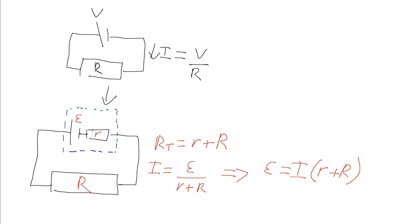Because this internal resistance has some resistance and has some current flowing through it, it will have some voltage associated with it — a voltage drop. So there is a potential difference across this resistor inside. If we connect leads to the exterior of the battery, because this internal resistance is integral to the cell as a whole, we can't measure the full EMF — we would see the difference between the EMF and this terminal PD. We lose some of these volts, and this voltage drop across the internal resistance we refer to as the lost volts.